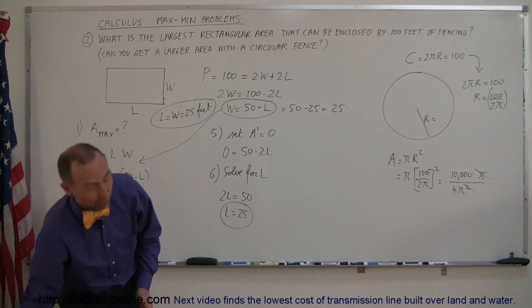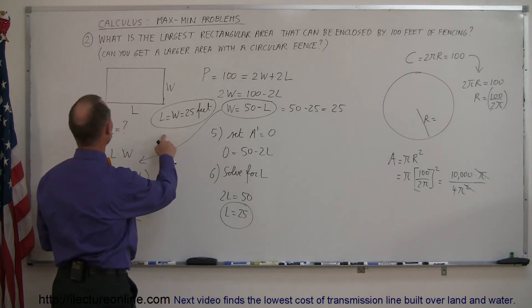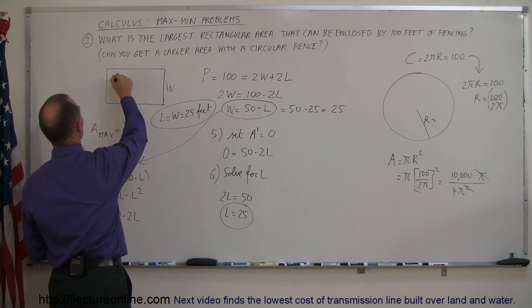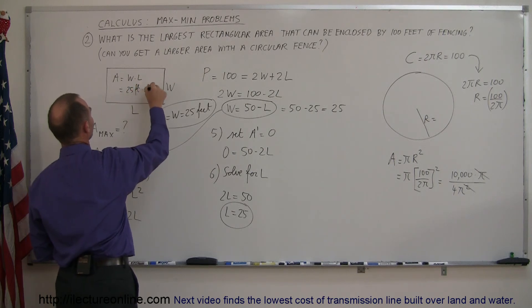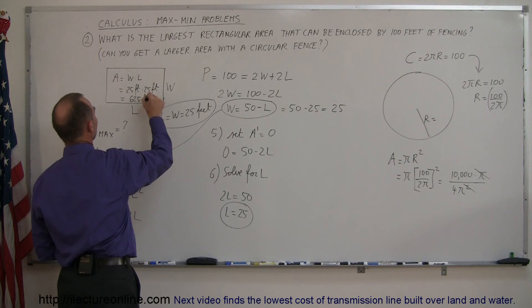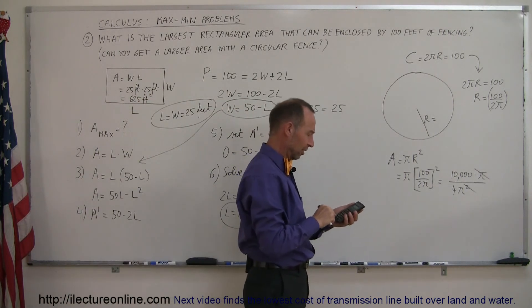would be 10,000 divided by 4 pi. Now, let's see if that's bigger or smaller than what we have over here. Now, by the way, what would the area be? Well, since the area is equal to the width times the length, and each of them are 25 feet,